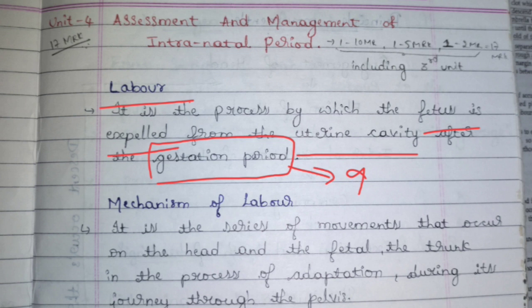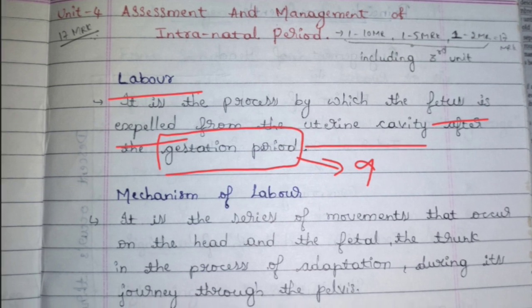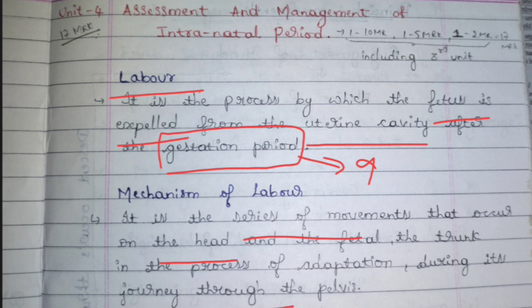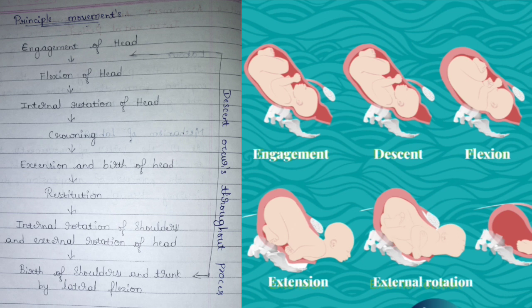The mechanism of labor is the series of movements that occur on the head and fetal trunk in the process of adaptation during the journey through the pelvis. The birth of the baby starts with the head coming out from the vagina first, then the baby's trunk (that is, the body), and then the leg is delivered. This entire journey is considered the mechanism of labor.